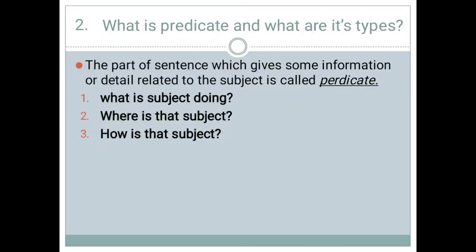Now moving towards the definition of predicate. The part of a sentence which gives some information or detail related to the subject is called the predicate. As we know, a sentence is divided into two parts: the subject and the predicate. The main work of the predicate is to provide information or detail regarding the subject.